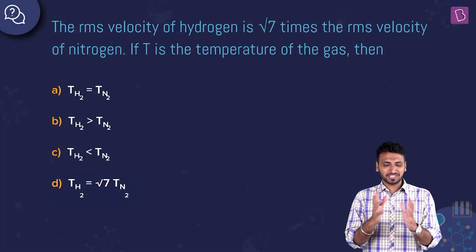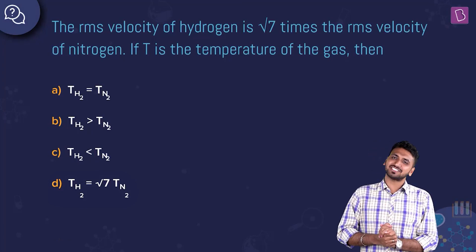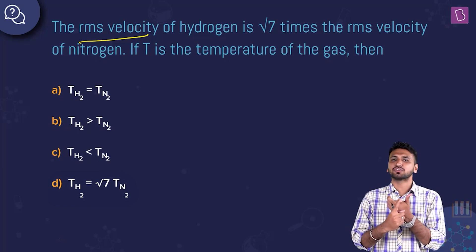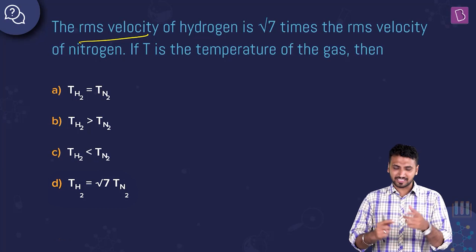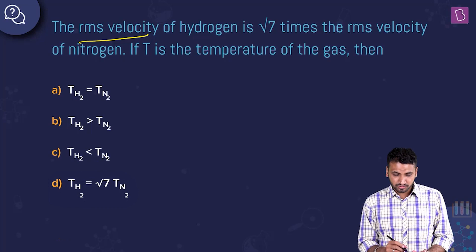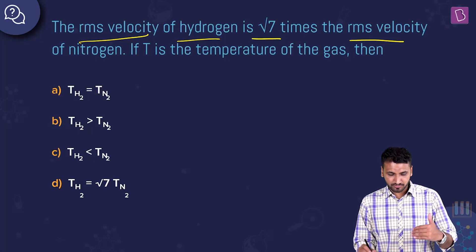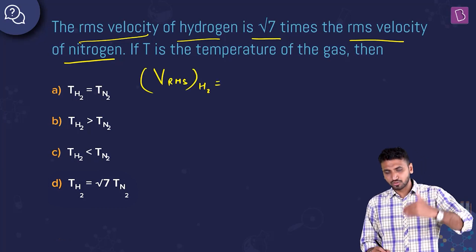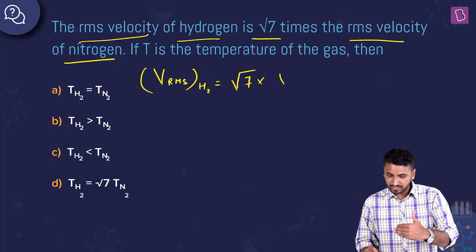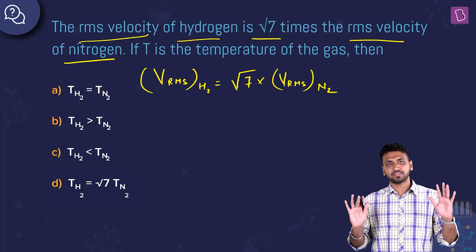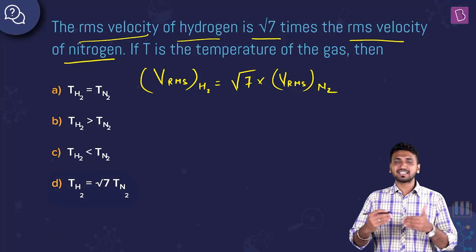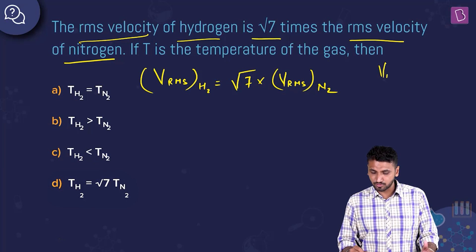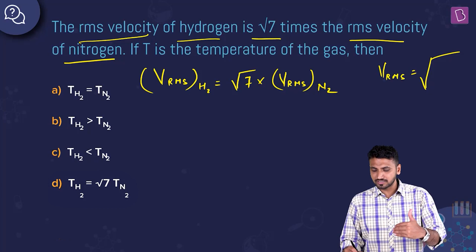Now we have a conceptual question from gaseous states of matter. We've studied three types of velocities: RMS (root mean square), MP (most probable), and average velocity. In this question, the RMS velocity of hydrogen is √7 times the RMS velocity of nitrogen. If T is the temperature of the gas, find the relation between the temperature of hydrogen and nitrogen.